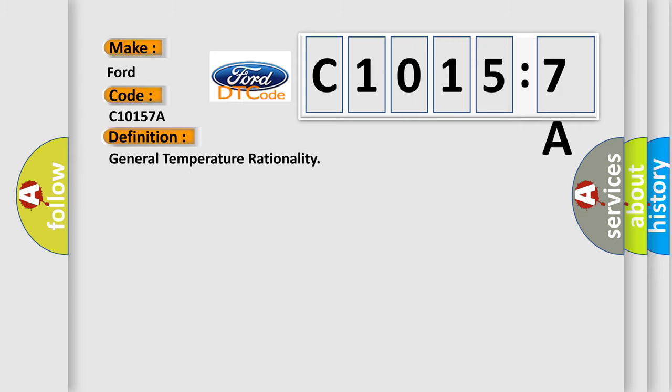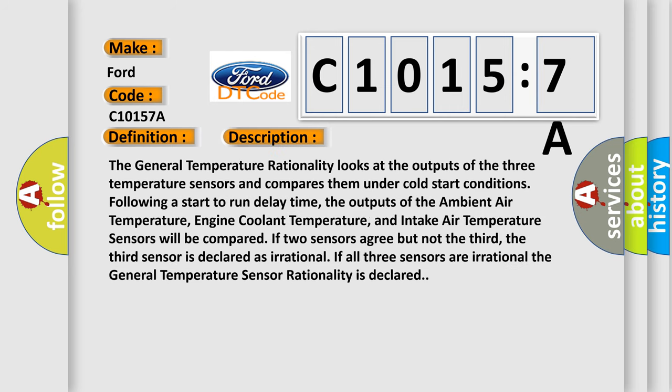The basic definition is General Temperature Rationality. The general temperature rationality looks at the outputs of the three temperature sensors and compares them under cold start conditions following a start-to-run delay time. The outputs of the ambient air temperature, engine coolant temperature, and intake air temperature sensors will be compared. If two sensors agree but not the third, the third sensor is declared as irrational. If all three sensors are irrational, the general temperature sensor rationality is declared.